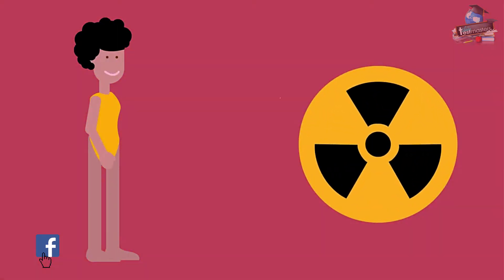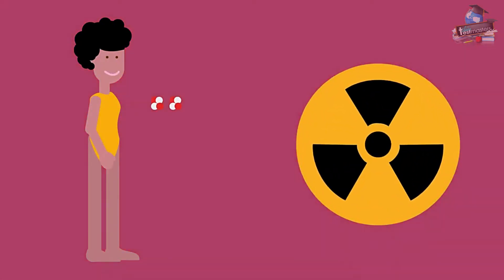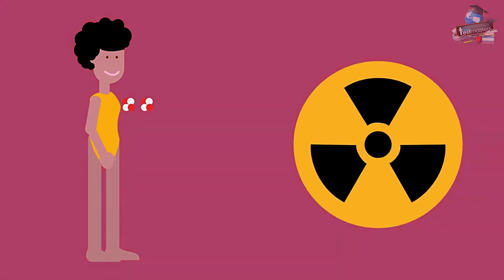As you have seen, alpha radiation is easily stopped by air, your skin and clothes. But it can be dangerous if you breathe in or swallow an alpha emitting material. Beta can pass into you easily but has low ionizing properties.